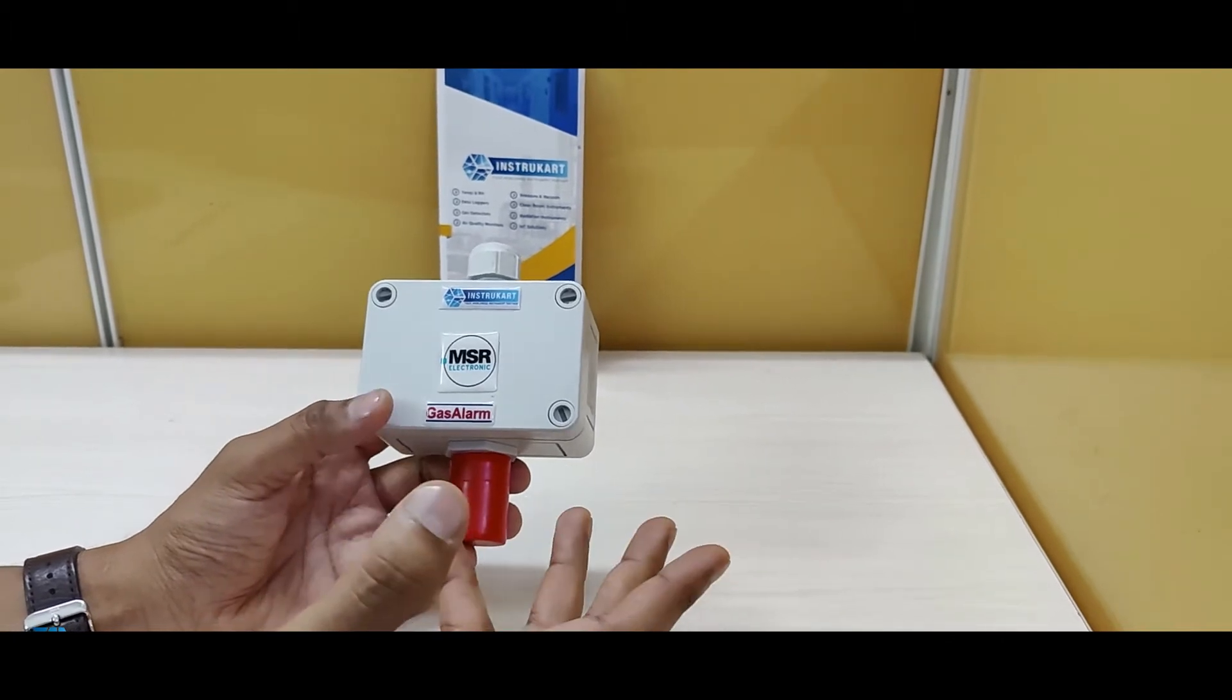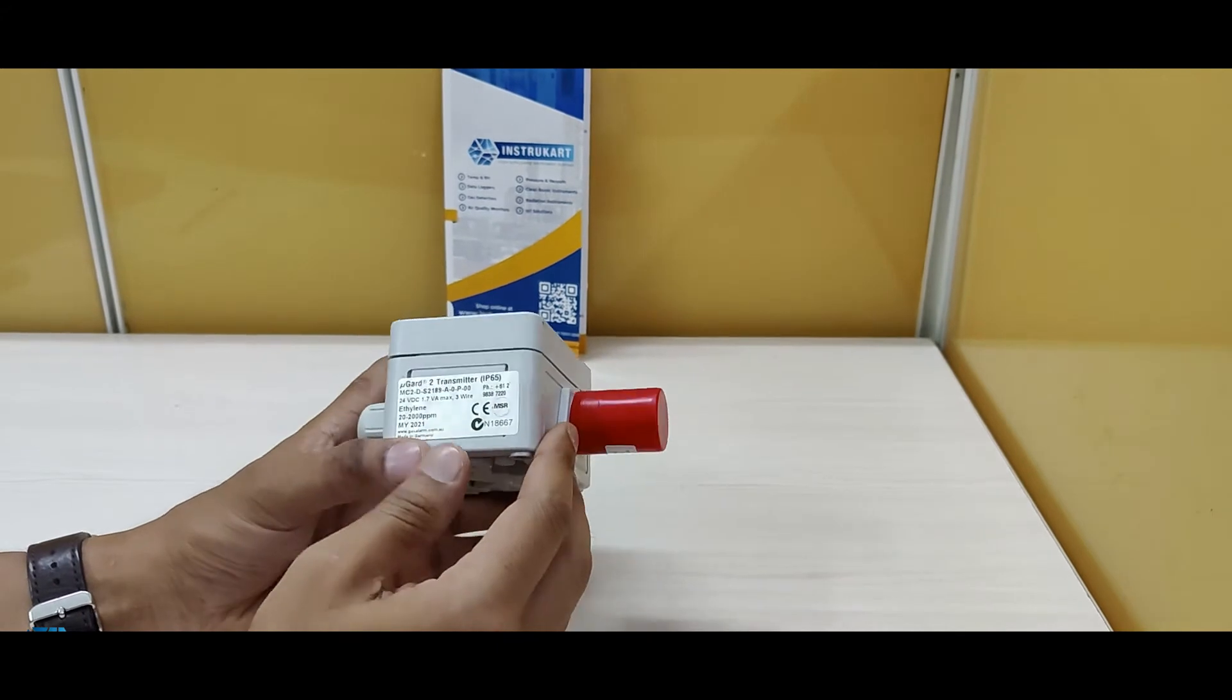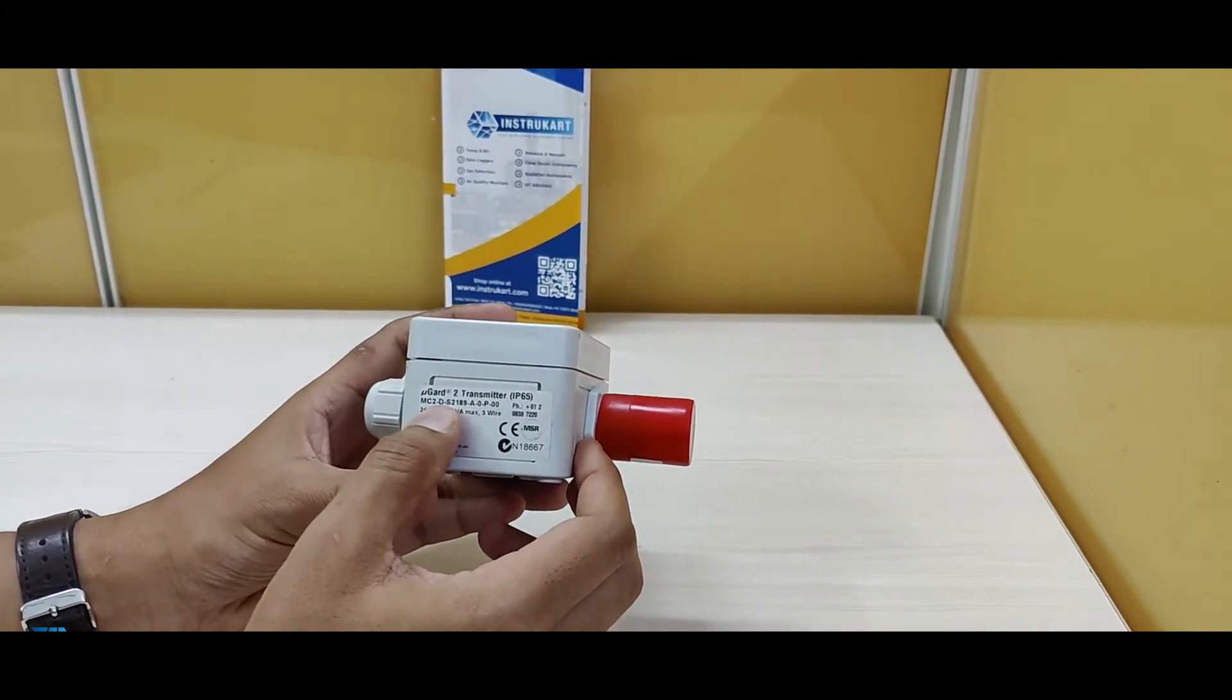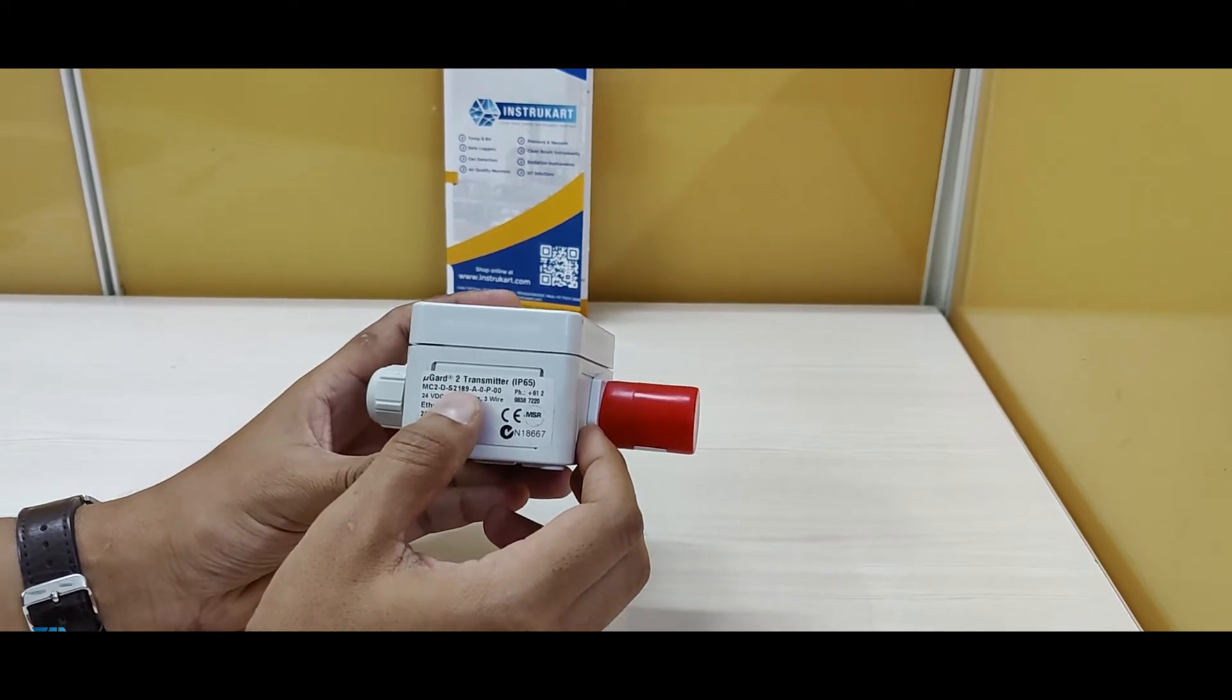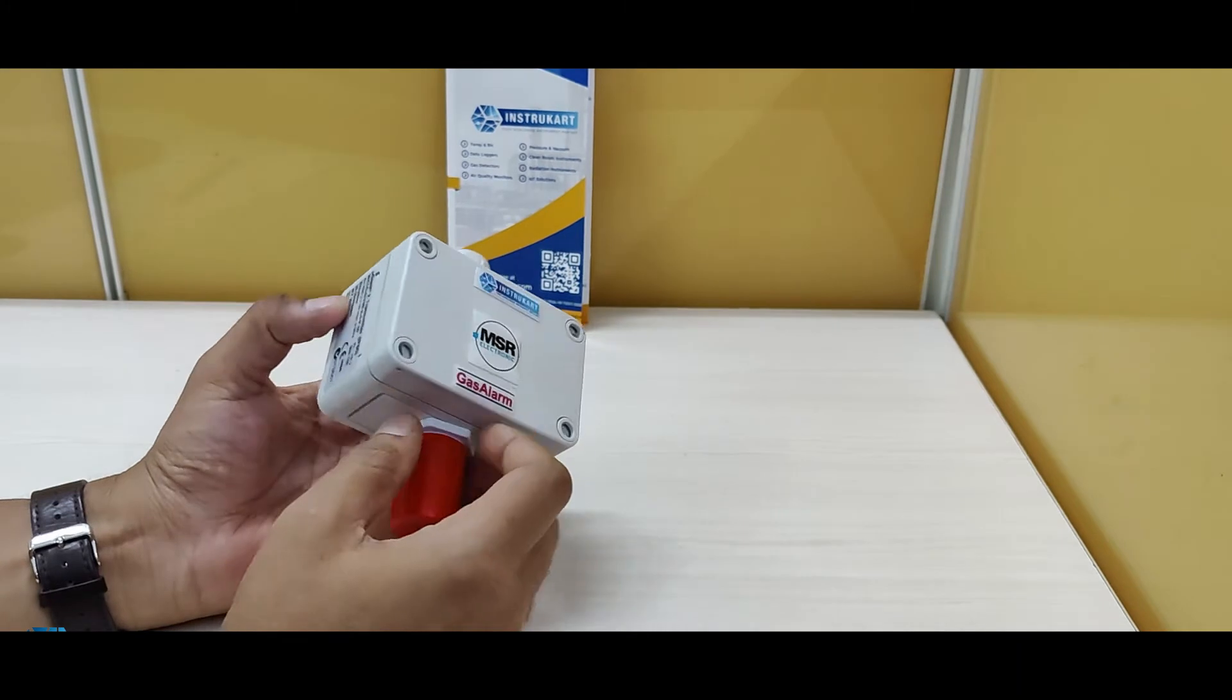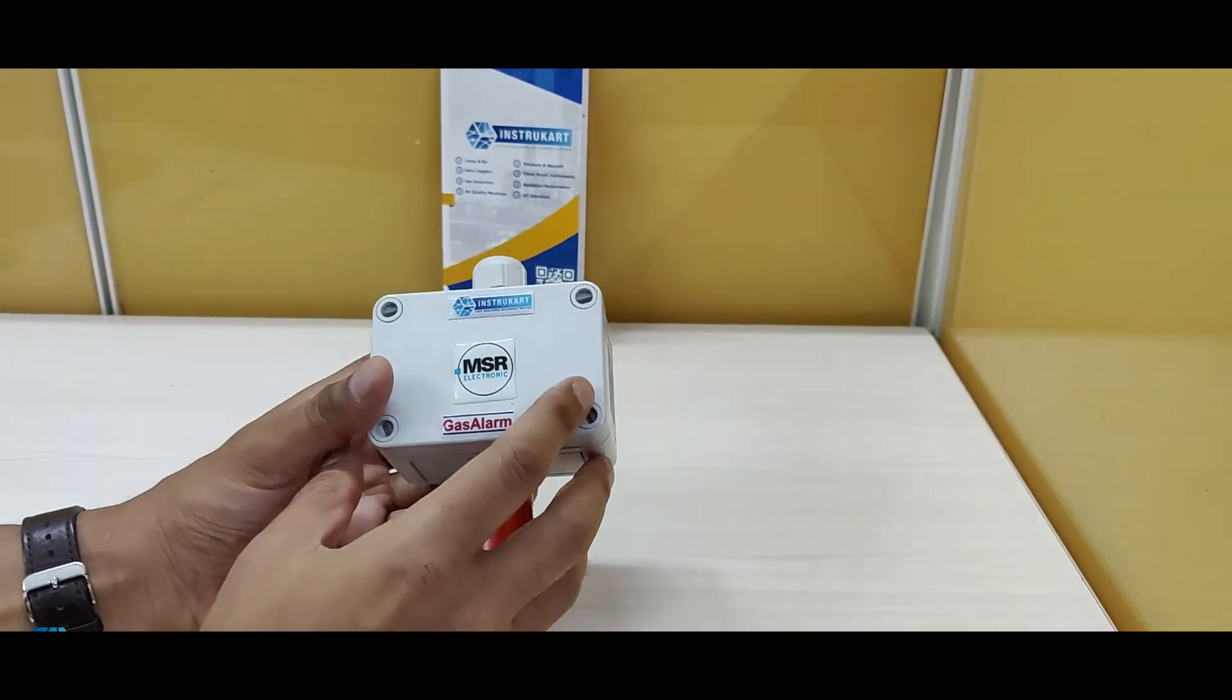The model number, as you can see, is MC2DS2189AP00. It has a power supply input of 24 volts. As you can see, this gland is there at the back. It can be mounted and this is the sensor part.